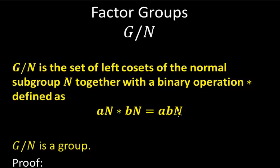Notice if N was not a normal subgroup, we could still partition the group into a set of left cosets. But the problem is that the binary operation AN star BN equals ABN would not be well defined. So it's important to remember that N must be a normal subgroup. So we'll prove now that G mod N is a group.